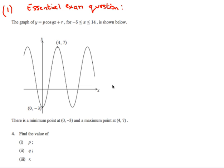Okay, so I'm going to have a look at some essential exam questions for IB standard level graphing, especially to do with trig functions. So here's the first question. We're given the graph y equals p cos qx plus r. We're given the domain for x, and then we have to find what p, q, and r are. This is a pretty typical question.